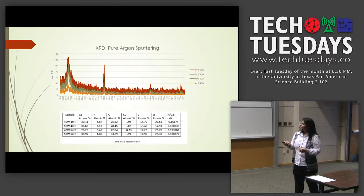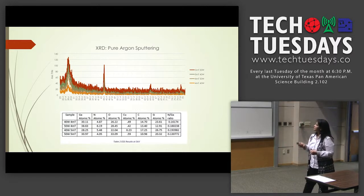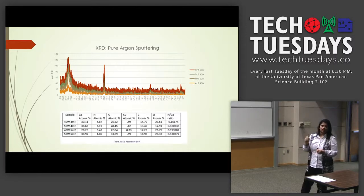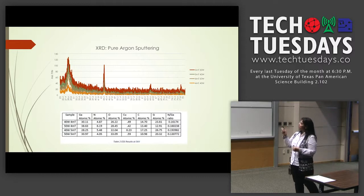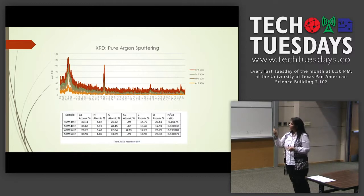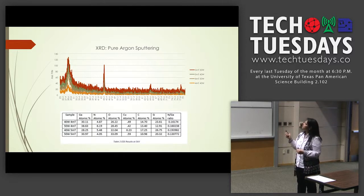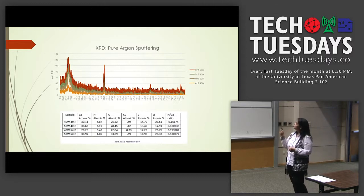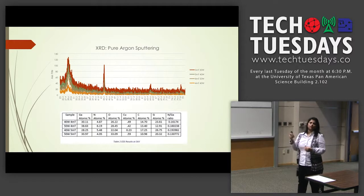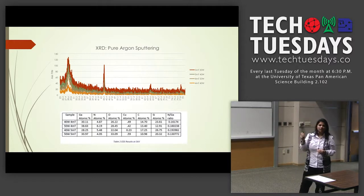For characterization, we did XRD. The peaks show where we are getting the material and whether it's a good or bad deposition. Our main goal is to deposit gallium nitride on silicon substrate, but we observed other materials present in the samples — oxygen, copper, and carbon — so we have to investigate why we are getting these other atoms.